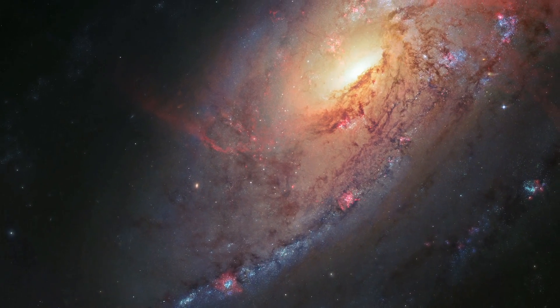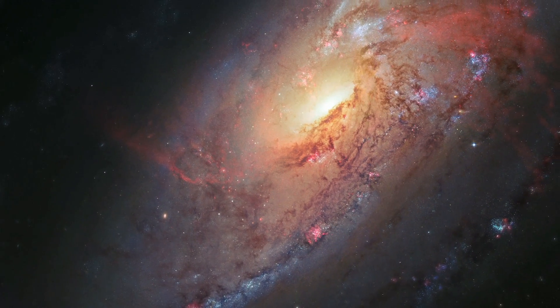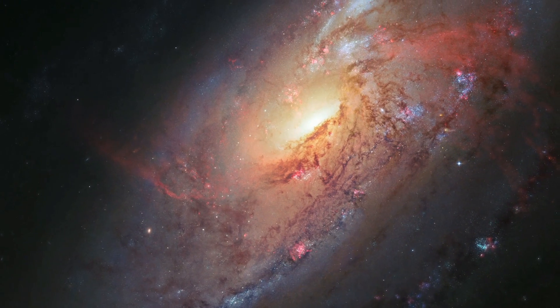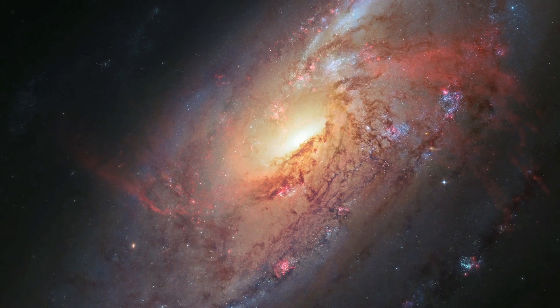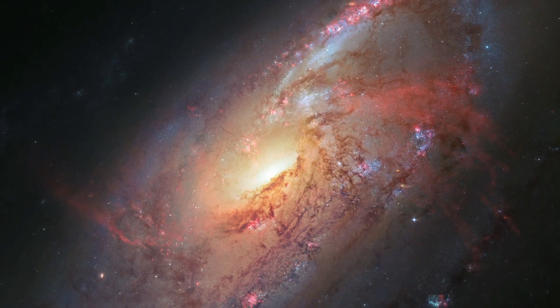The NASA ESA Hubble Space Telescope, with a little help from an amateur astronomer, has produced one of the best views yet of nearby galaxy Messier 106, a striking spiral galaxy with a number of secrets.